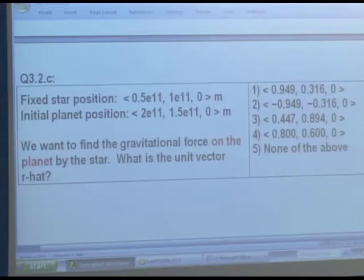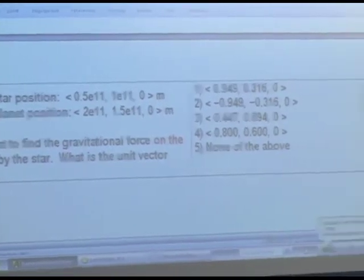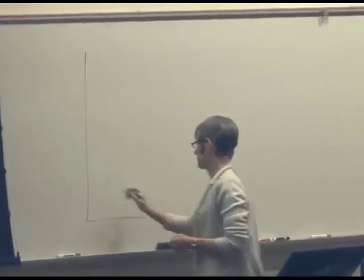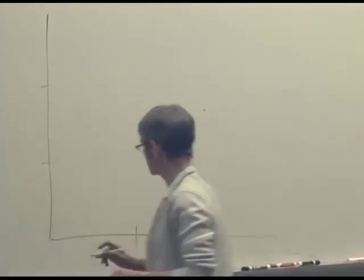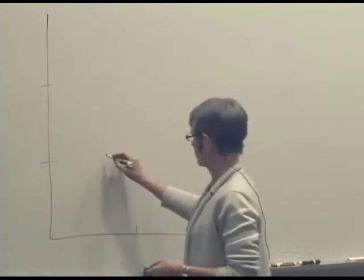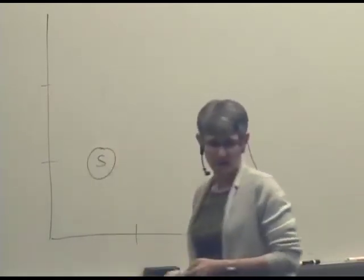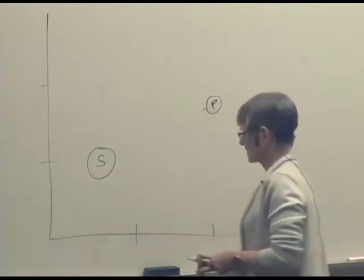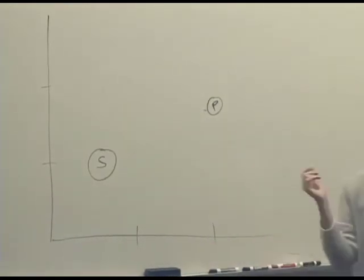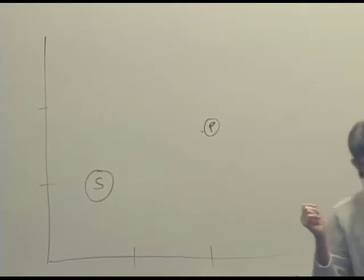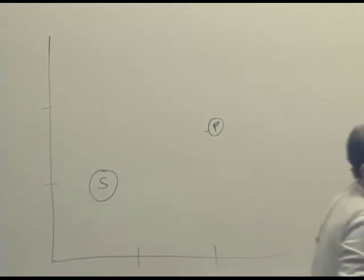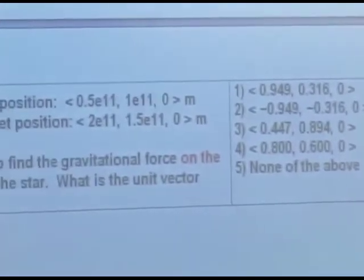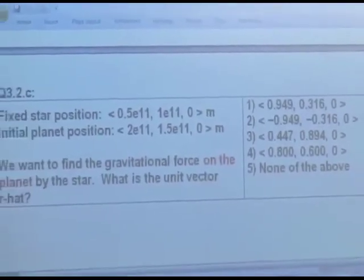So it looks like the positions given here. So we've got an origin down here somewhere. The star is at, so if we say this is one, two, one, two, the star is at point there. And the planet is at two, one point five. So it looks like the planet's there. And it's always a good idea to draw these diagrams. If you don't draw the diagram, it's going to be tough to check your work.